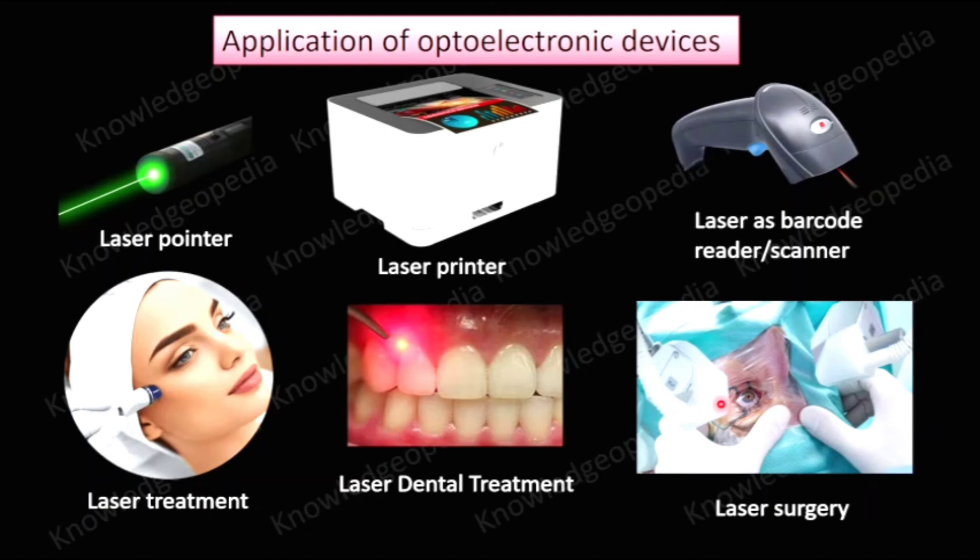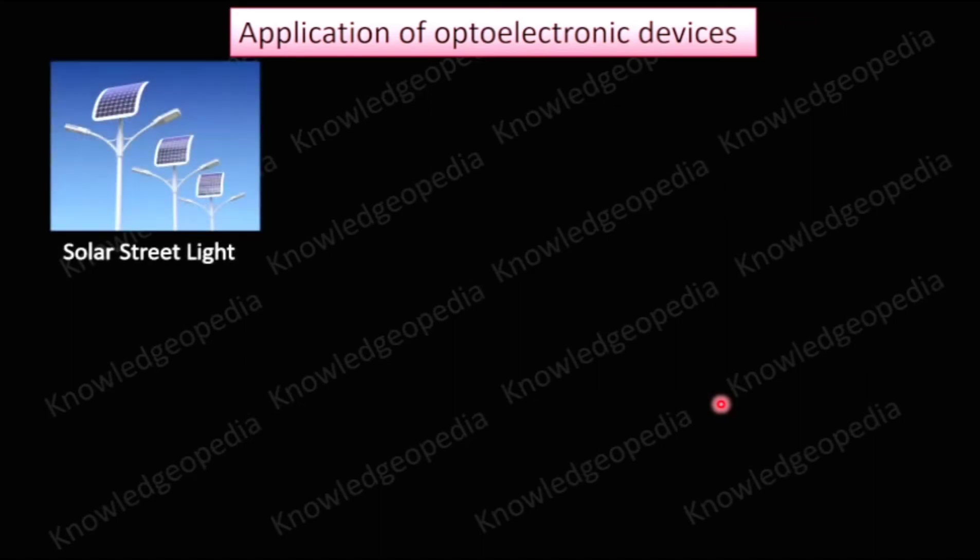These are just a few applications — there are many more in which we use optoelectronic devices. Let us now move to applications that come from our natural resource of light, that is sunlight. The solar cell is the basic optoelectronic device which converts solar energy into electrical energy.